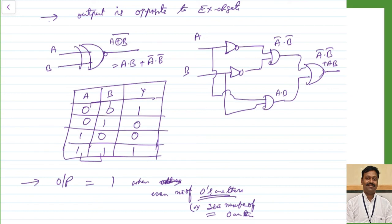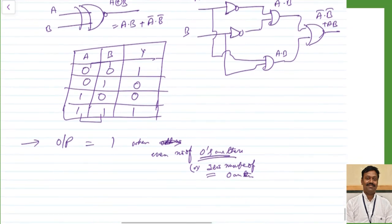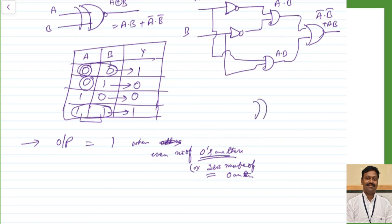The exclusive NOR gate is used as a comparator — it gives output 1 only when both inputs are the same. A second application is as an inverter: when input A is connected to 0, the output is B̅ (inverted). When A is 1, the output copies B. So if you connect input A to ground, this XNOR gate acts as an inverter.